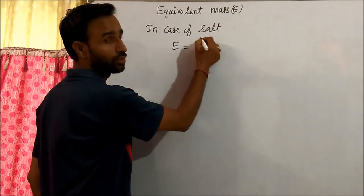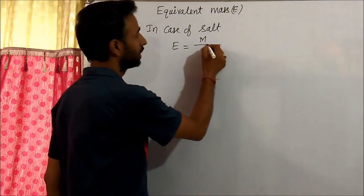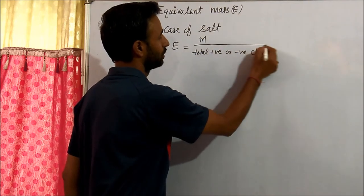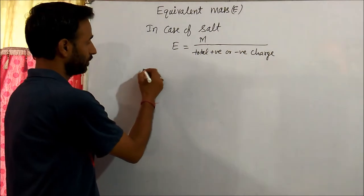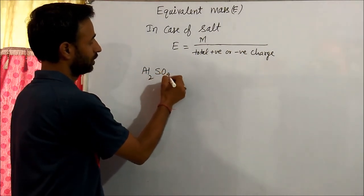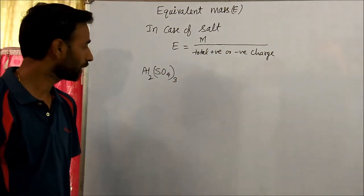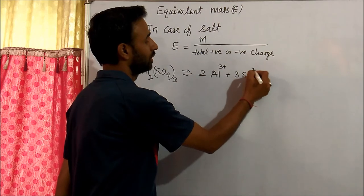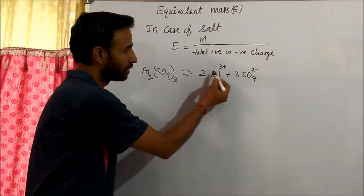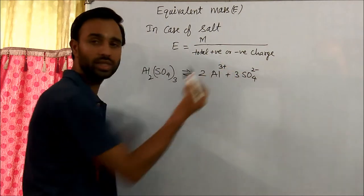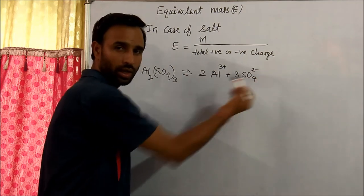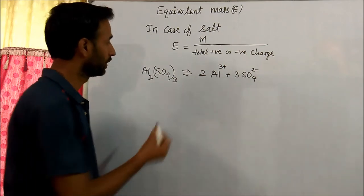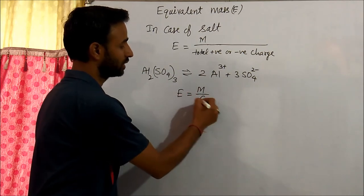In case of salts, equivalent mass equals molar mass divided by total positive or negative charge. For example, Al₂(SO₄)₃ dissociates into 2Al³⁺ and 3SO₄²⁻. The total positive charge is 2 times 3, which equals 6. Since in a salt total positive charge equals total negative charge, equivalent mass of Al₂(SO₄)₃ is M by 6.